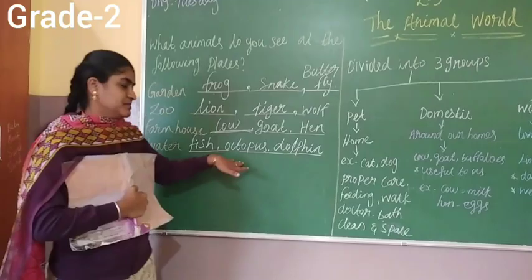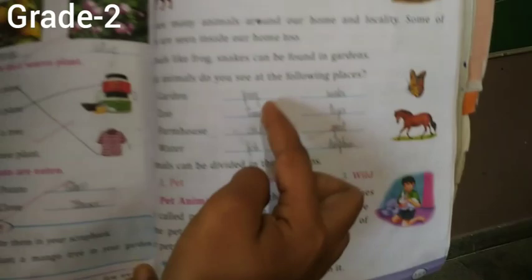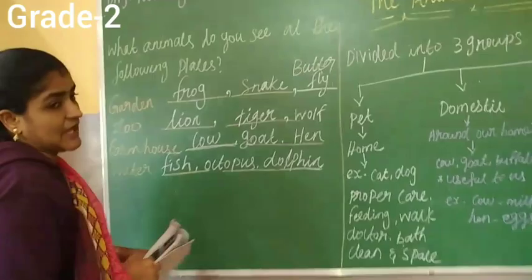Children, you have to write like this. They have given two lines, so you have to write only two animal names. Write in pencil, write neatly, and don't make any mistakes.